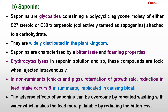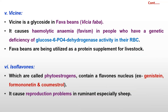Excess saponin also causes erythrocyte lysis. In case of non-ruminants such as chicks and pigs, there is retardation of growth rate and reduction in feed intake. In case of ruminants, saponins cause bloat. The adverse effect of saponins can be overcome by repeated washing with water, which makes the feed more palatable by reducing bitterness and reducing the chance of foam formation.